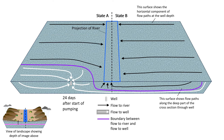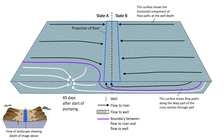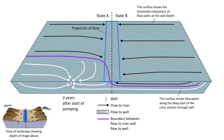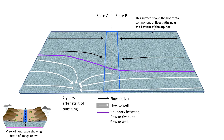The aquifer volume in which groundwater flows to the well continues to expand, with groundwater further and further away from the cross section moving towards the well. At about two years on the horizontal surface at the well depth, all flow from state B is still to the river rather than to the well, while deeper groundwater from state B migrates towards the well. This view shows the horizontal components of the flow paths on the surface near the bottom of the aquifer after about two years of pumping. Groundwater over a large area, including from state B, flows to the well rather than to the river. Flow at this depth is not as strongly influenced by the river compared to flow at shallower depths.